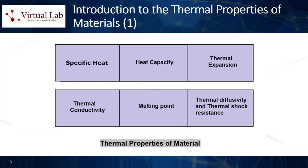3. Thermal diffusivity, alpha. This is the rate at which a material can transfer or distribute heat within itself. It is calculated by dividing the thermal conductivity of the material by the product of its density and specific heat capacity: alpha = K/(ρC). It is typically measured in square meters per second (m²/s).